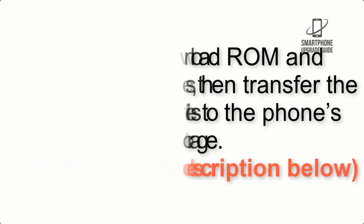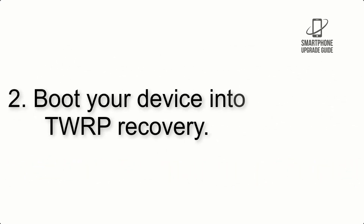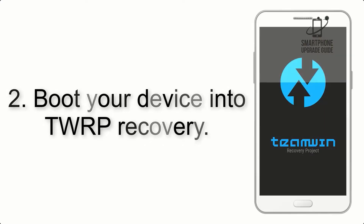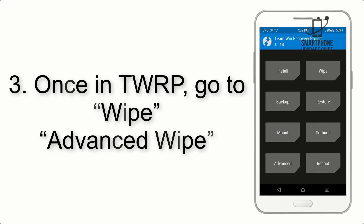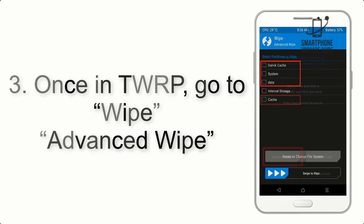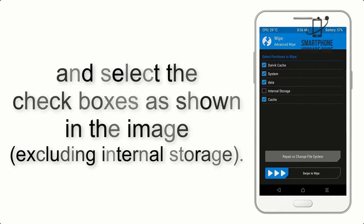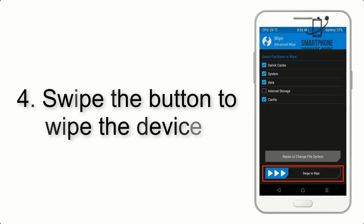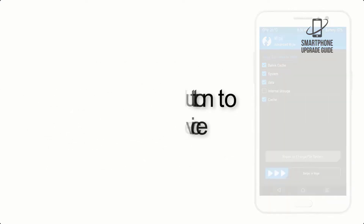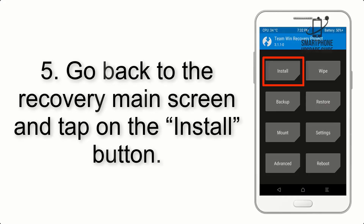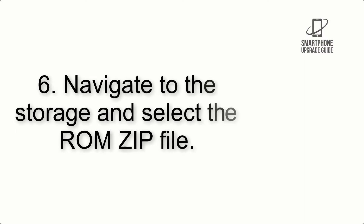Step 2: Boot your device into TWRP recovery. Once in TWRP, click on Wipe > Advanced Wipe, and select the checkboxes as shown in the image, excluding internal storage. Step 4: Swipe the button to wipe the device. Step 5: Go back to the recovery main screen and tap on the Install button.